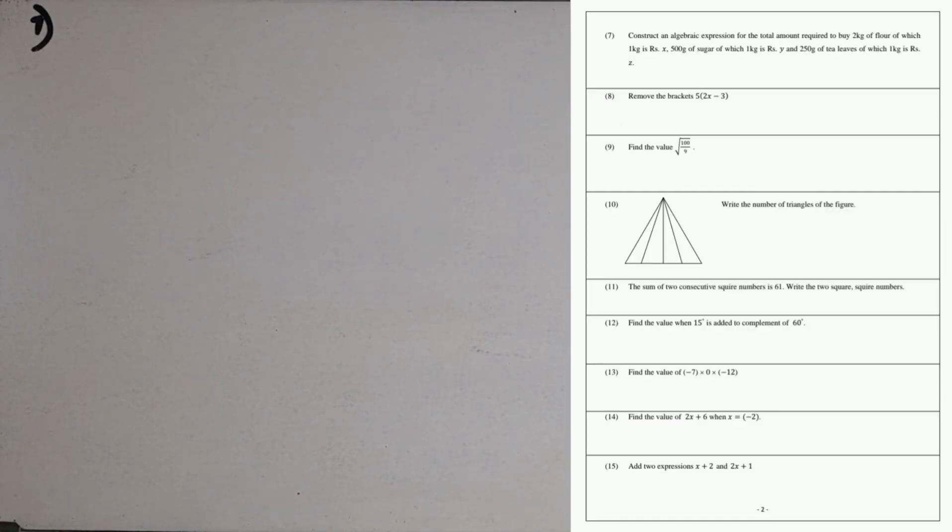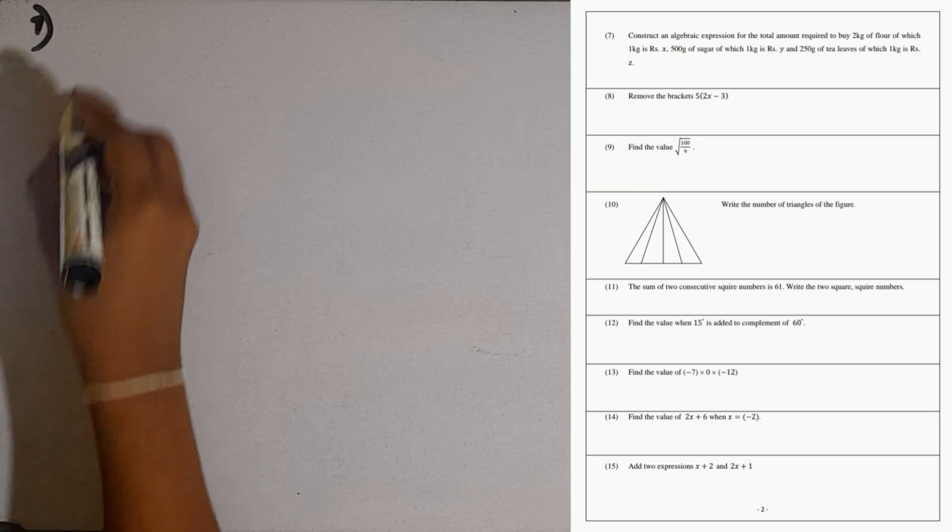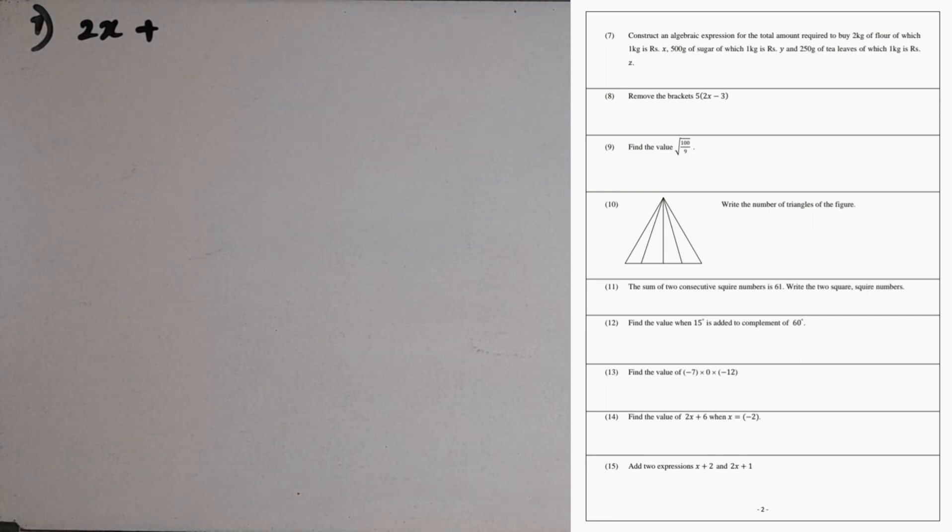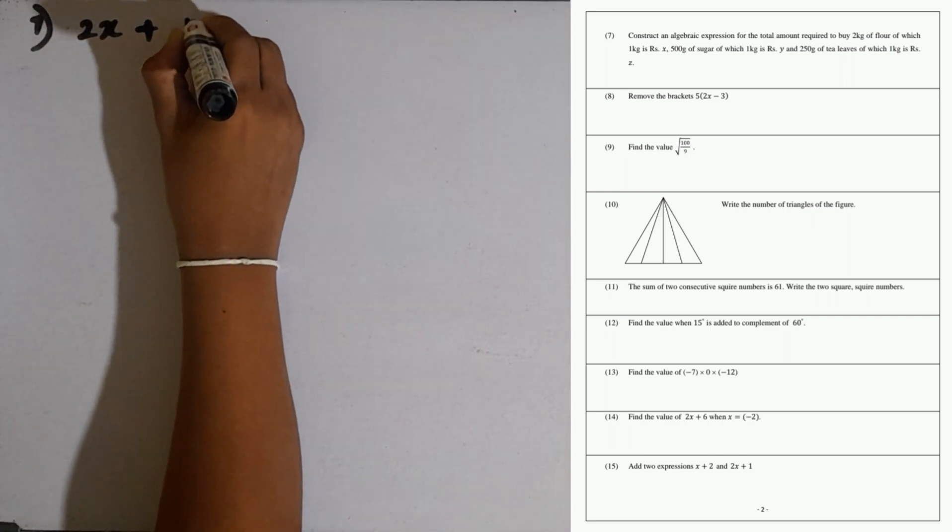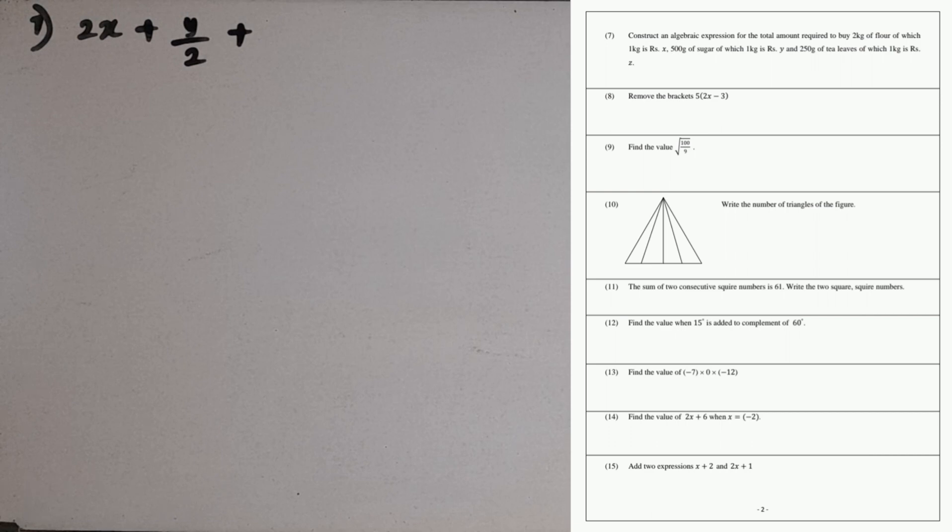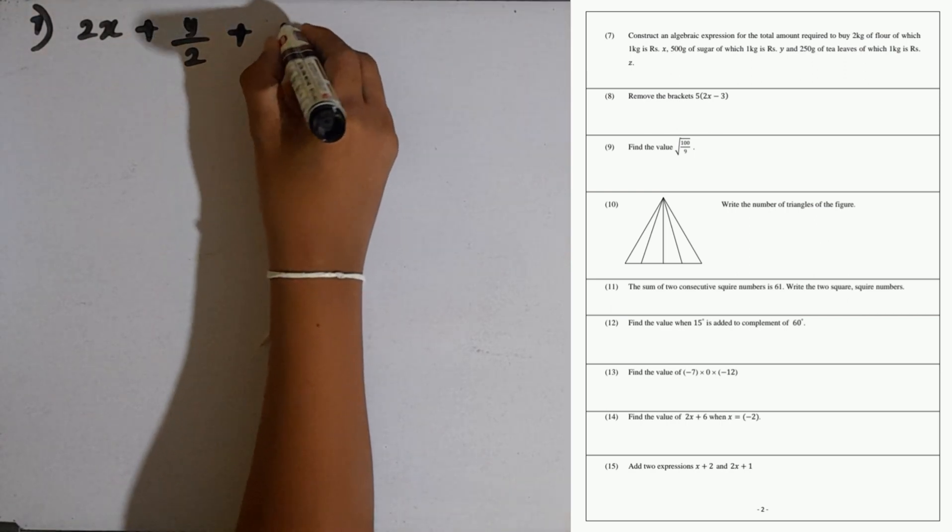Question number 7: construct an algebraic expression for the total amount required to buy 2 kilograms of flour of which 1 kilogram means x. If we want to buy 2 kilograms, then that is 2x, plus 500 grams of sugar of which 1 kilogram means y, then y should be divided by 2, and 200 grams of tea leaves of which 1 kilogram equals z, then z should be divided by 4.